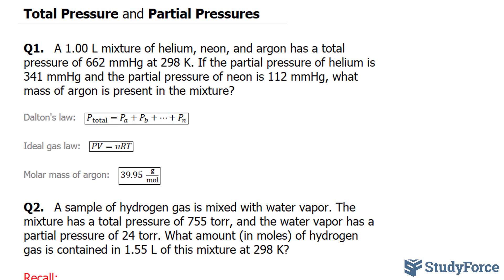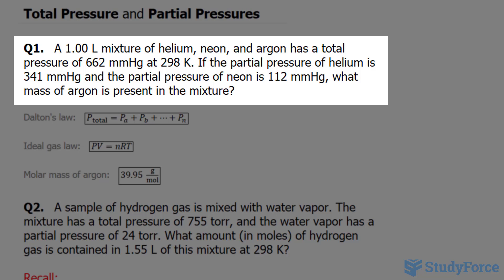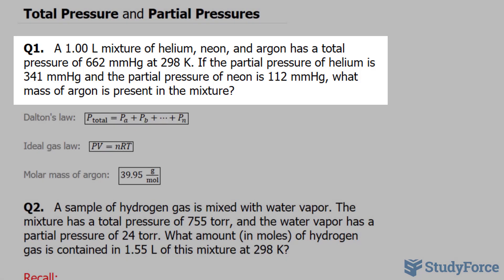In this lesson, I'll show you two examples on how to solve questions involving total pressure and partial pressures. The question reads: a 1.00 L mixture of Helium, Neon and Argon has a total pressure of 662 mmHg at 298 K. If the partial pressure of Helium is 341 mmHg and the partial pressure of Neon is 112 mmHg, what mass of Argon is present in the mixture?